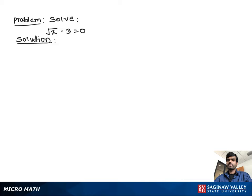Solve square root x minus 3 equal to 0. Let's write the problem one more time: square root x minus 3 equal to 0.